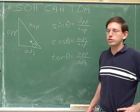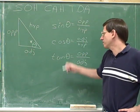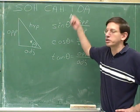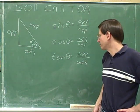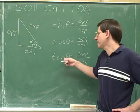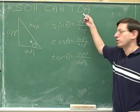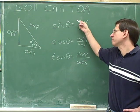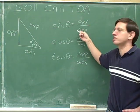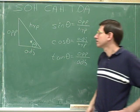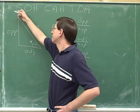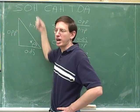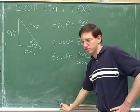Now we've defined what we mean by the sine of theta, the cosine of theta, and the tangent of theta, and we've seen how we can use the SOHCAHTOA mnemonic to help us remember. Sine, cosine, and tangent are all ratios or fractions. SOHCAHTOA reminds us what to put on the top of each fraction and what to put on the bottom. For example, for the sine, we put the opposite side on top and the hypotenuse on the bottom — that's what SOH stands for.